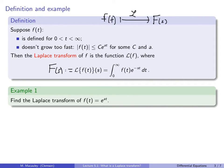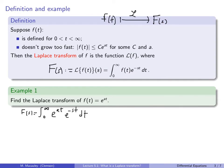Let's do an example: compute the Laplace transform of f(t) = e^(at). So F(s), using the definition, is the integral from 0 to infinity of e^(at) times e^(−st) dt. We're integrating out t, so at the end we'll be left with a function of s. It takes a while to get used to the fact that t disappears and we're left with a function of s, but the more you practice, the more natural it becomes.